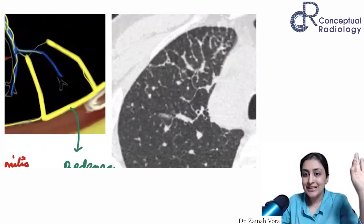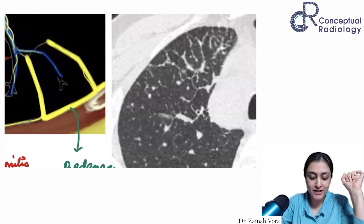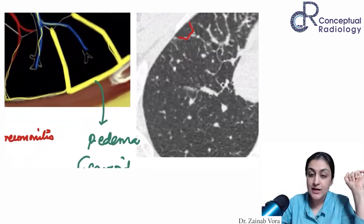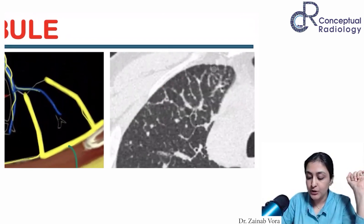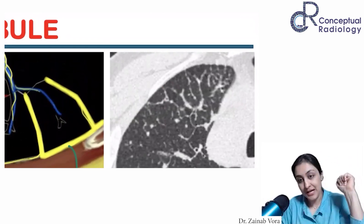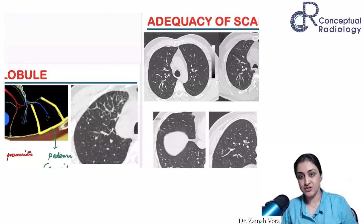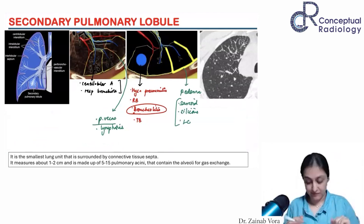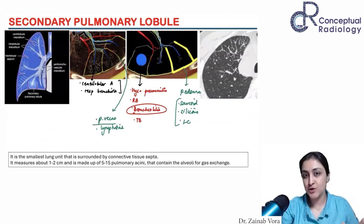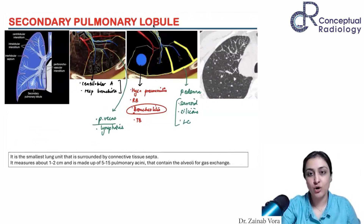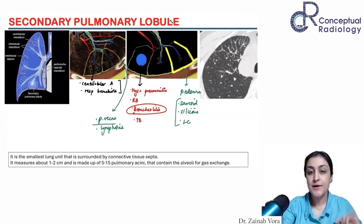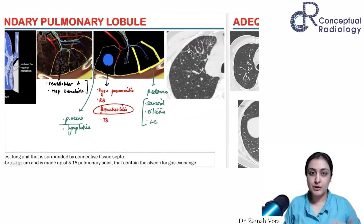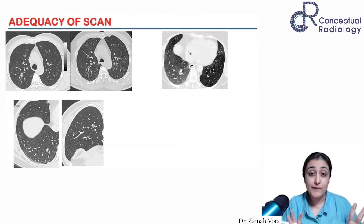On CT, normally you don't see the lobule - only when there is pathology. With interlobular septal thickening you can appreciate the hexagonal units which are the secondary pulmonary lobules. Regarding ILD: just giving a diagnosis of ILD is not enough - it's as good as not reporting the scan. You have to describe the exact pattern. Diagnosing 'ILD' alone is not your job; identifying the specific pattern is.